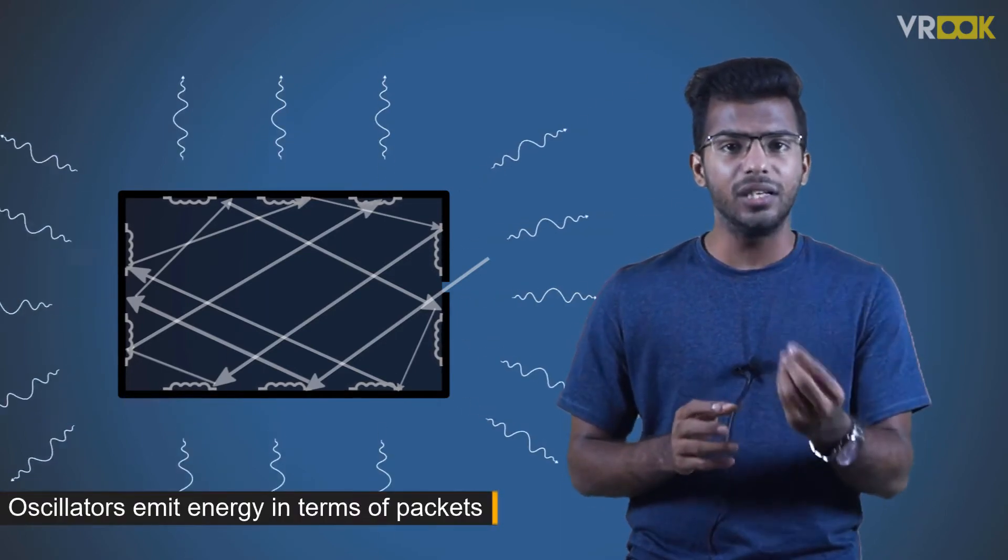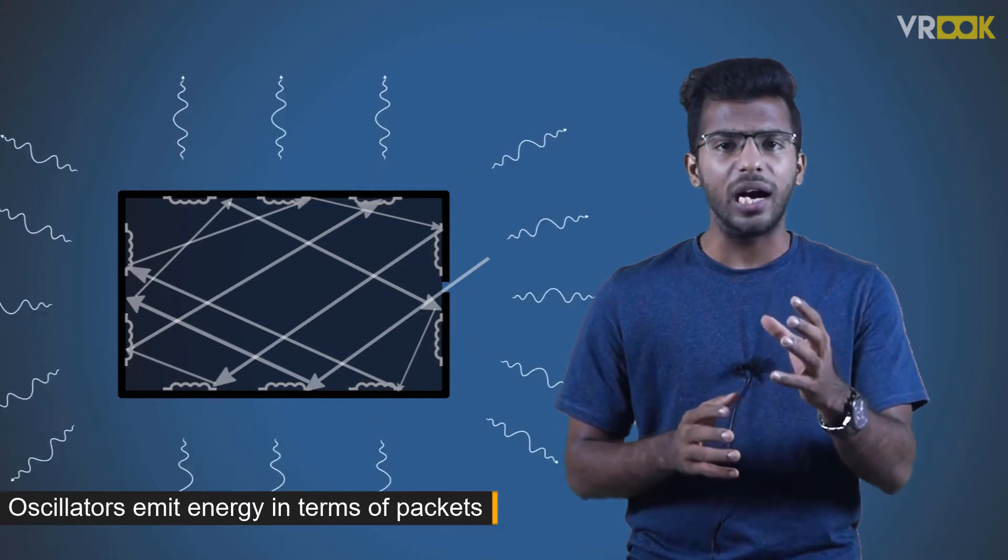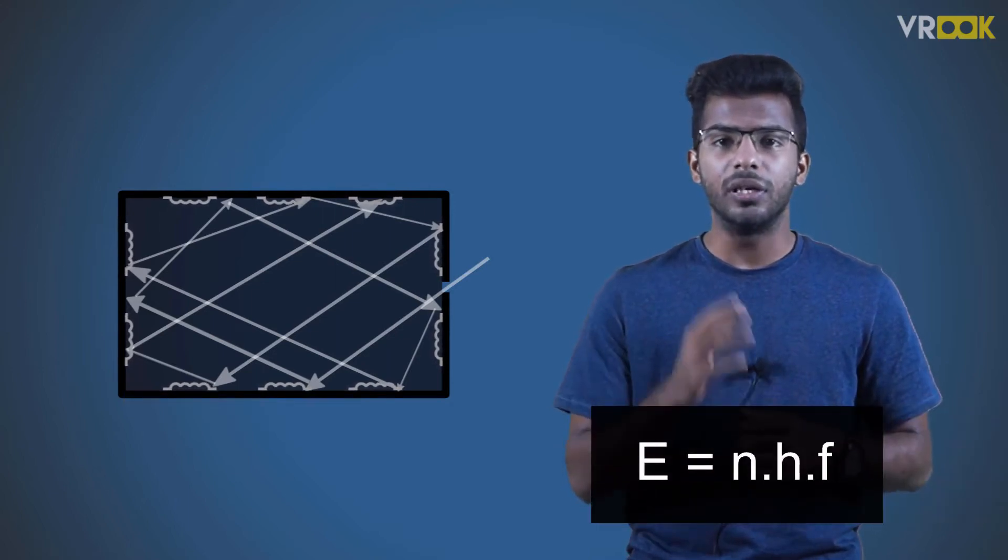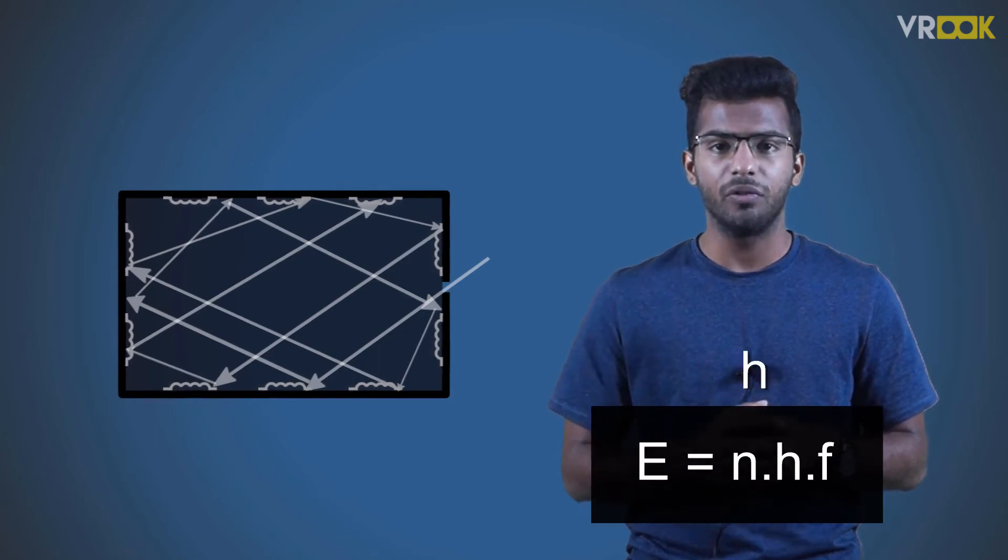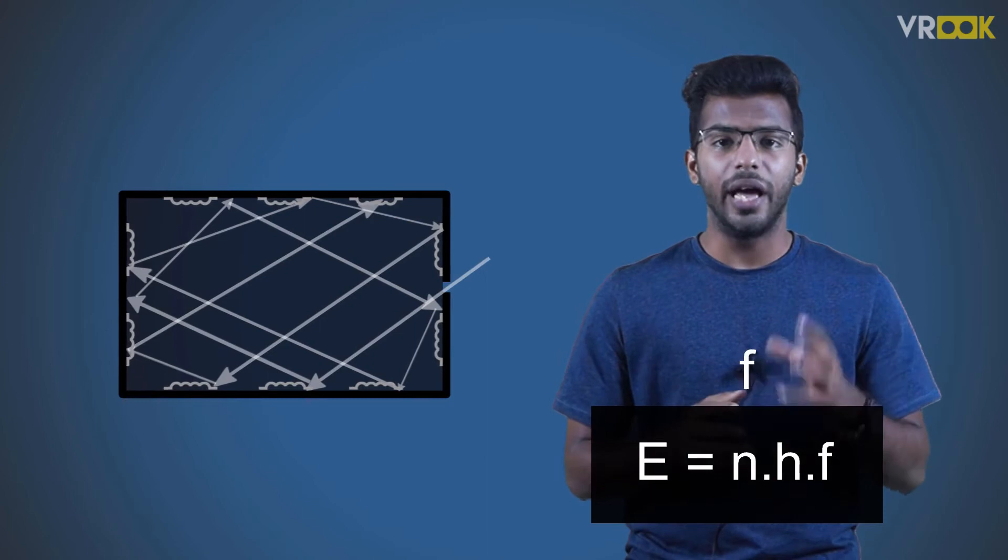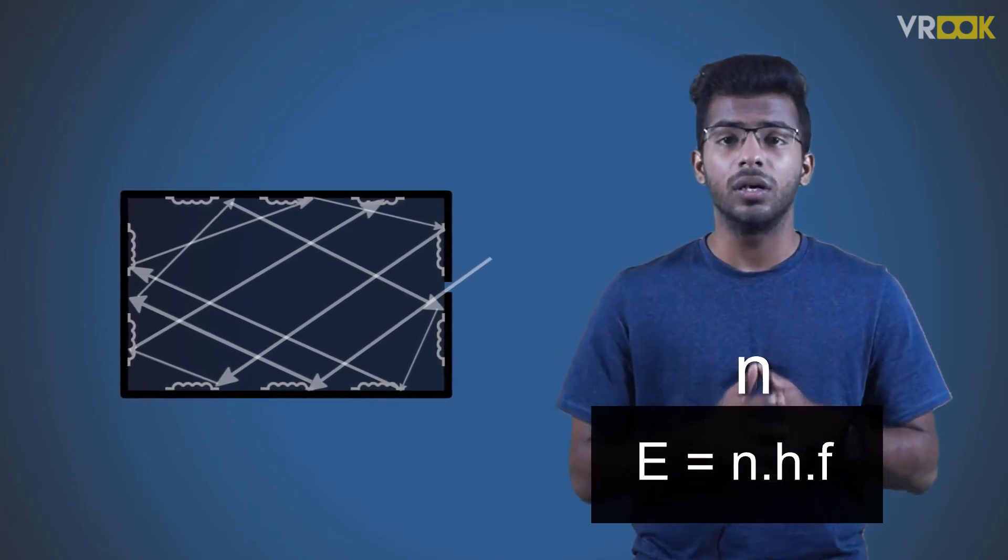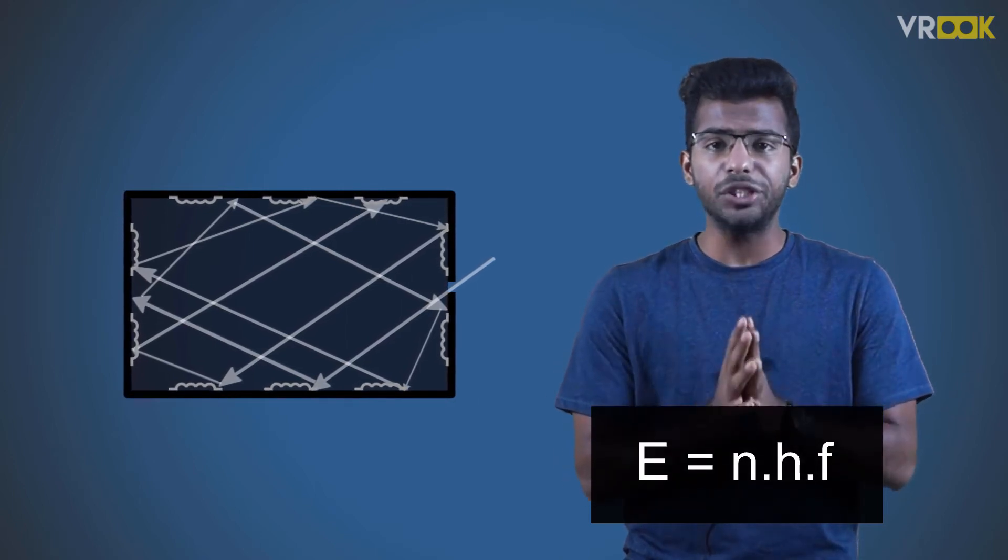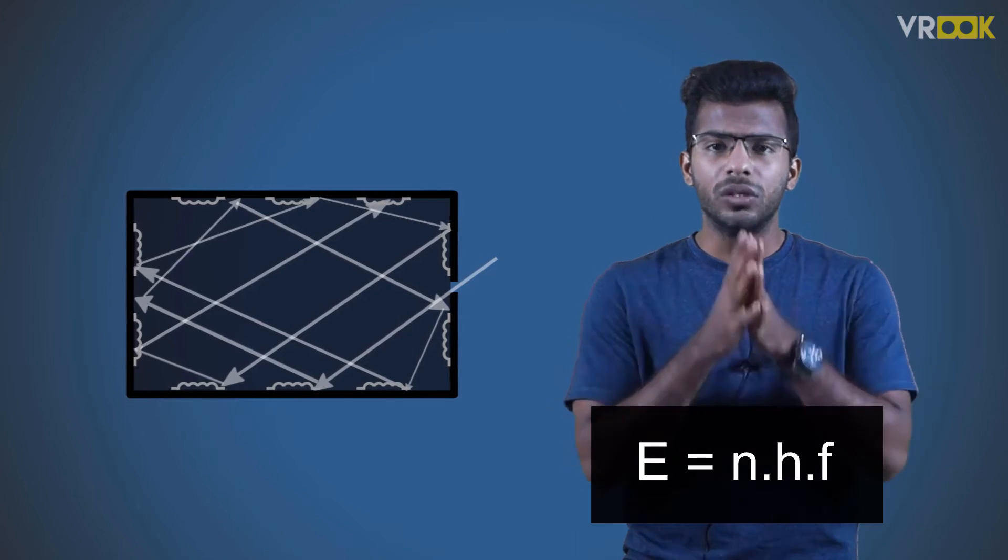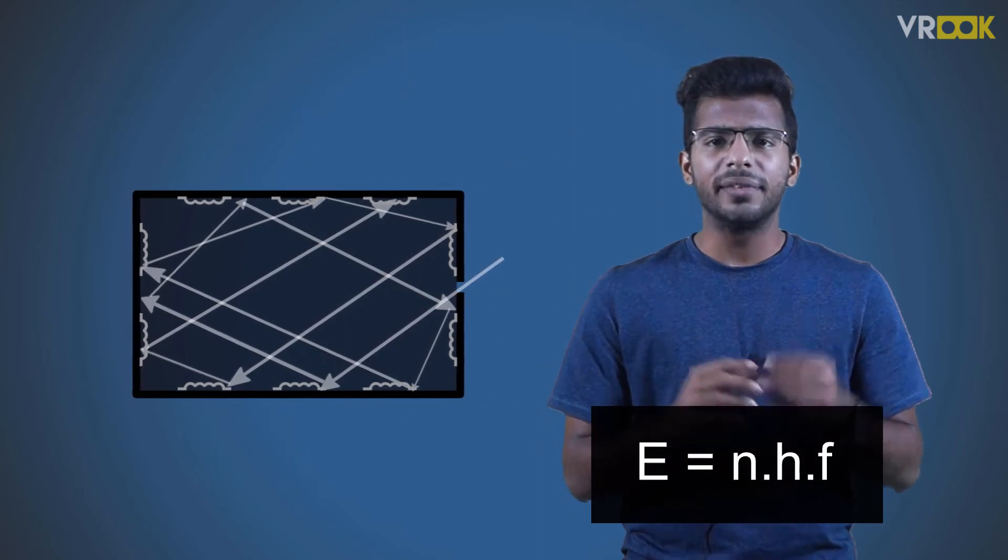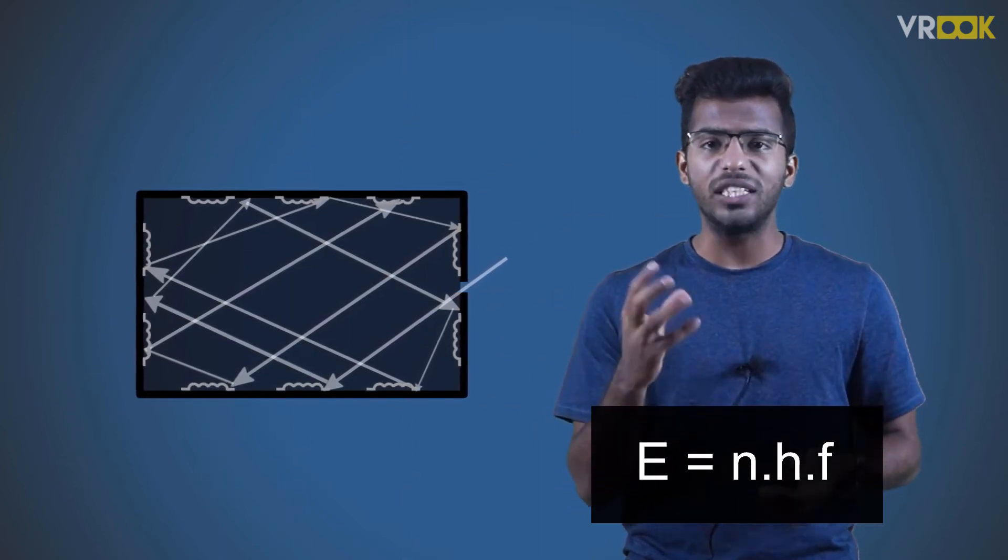Blackbody emits because of oscillation. He went on to propose that these oscillators emit energy in terms of packets, a quanta of energy. One quanta is the lowest possible energy state that the oscillator can emit. He gave an expression E equals n·h·f, where h is called Planck's constant, f is the frequency of the oscillator, and n is a whole number like 1, 2, 3. So the radiation coming out of blackbody is due to the thermal oscillations of the oscillator on the walls of cavity and they come out in terms of packets or quantum of energy.